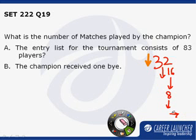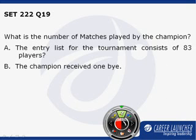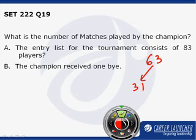If we take a number which is not even, let us take 63. Then there will be 31 matches, 31 winners of those 31 matches, and one of the players will have to be given a bye. So the number of players qualifying in the next round will become 32.